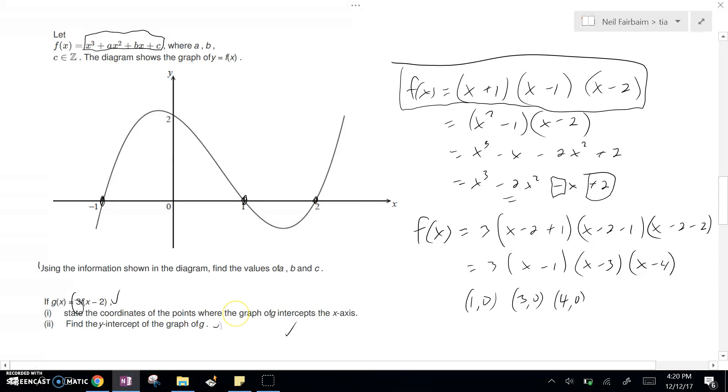The next part, what is the y-intercept? Well, the y-intercept is simply, we look at this equation, and make x equal to zero, and you'll find your y-intercept. So, three times negative one, times negative three, times negative four, is equal to negative 36, and therefore, your y-intercept is at negative 36.